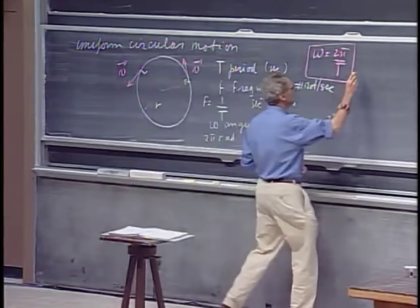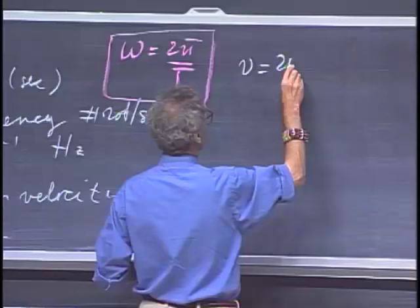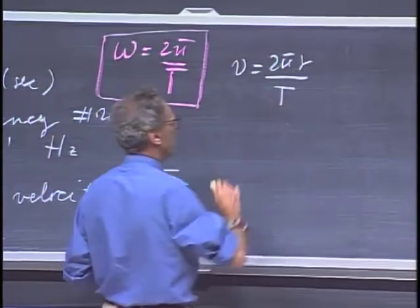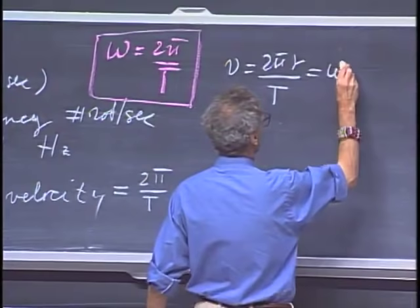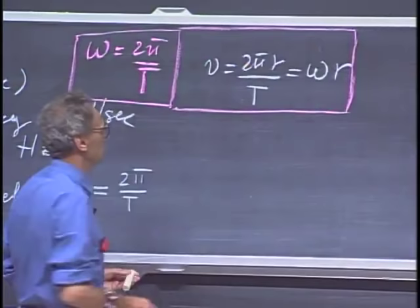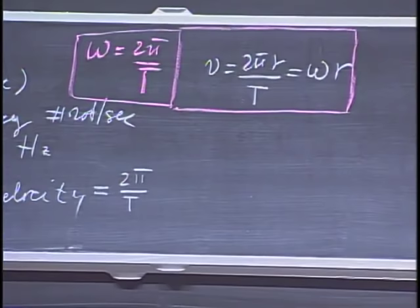The speed v is, of course, the circumference two pi r divided by the time to go around once. But since two pi divided by T is omega, you can also write this as omega r. These two things — omega equals two pi over T, and v equals omega r — you really want to remember.